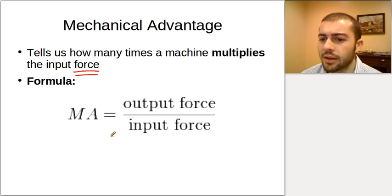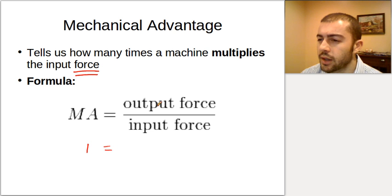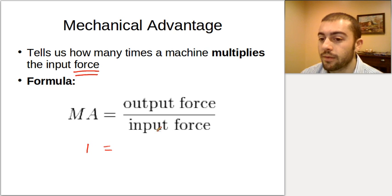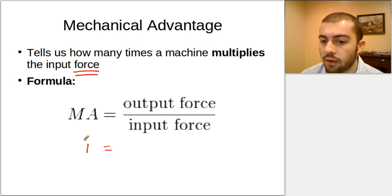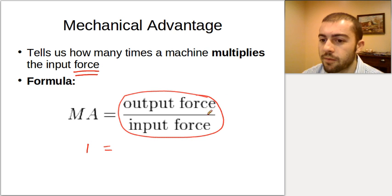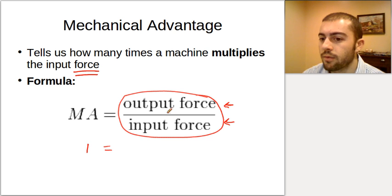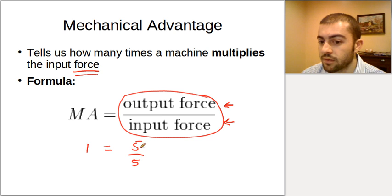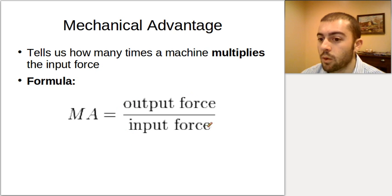A couple of things to think about here. If we have a mechanical advantage that equals 1, what does that tell us about the input force and the output force? What that means is that the output force and the input force have to be the same. Because this is essentially just a fraction — any fraction that equals 1 means the numerator and denominator are the same. So if the output force is 5, the input force has to be 5 if the mechanical advantage is 1.